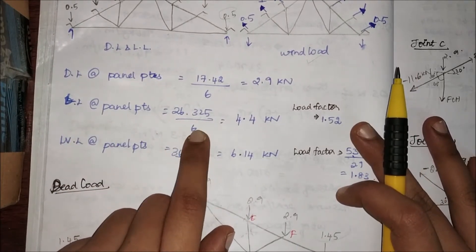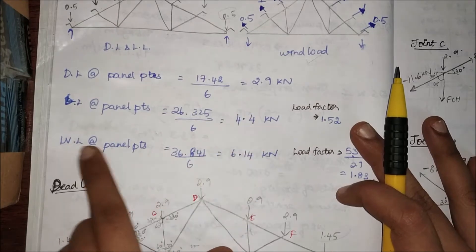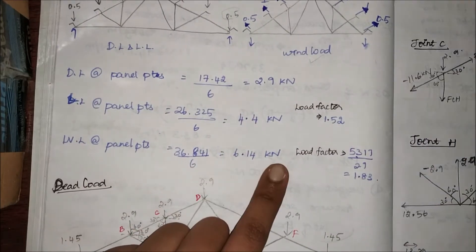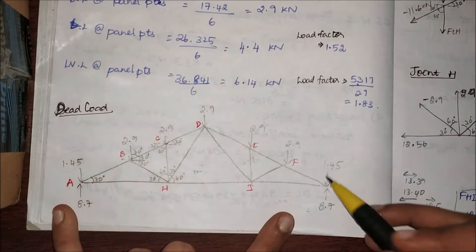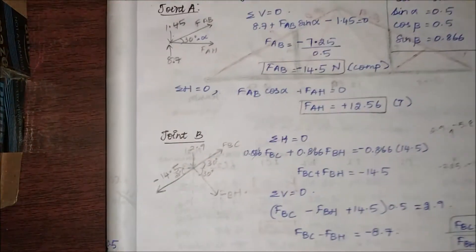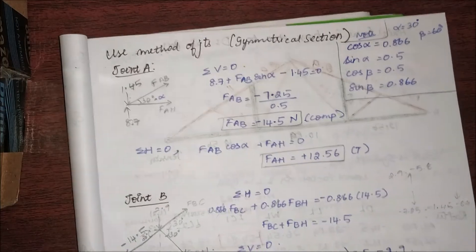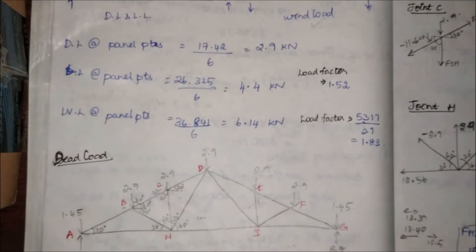Next is live load at panel points. For this again you have to divide by six to get the answer. For wind load also you divide by six to get the answer. Now that you have the panel point loads, you have to start with the method of joints to analyze what is the axial force acting on the steel structure.